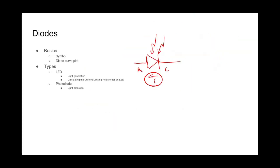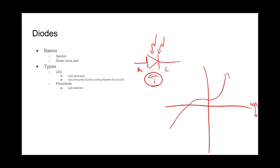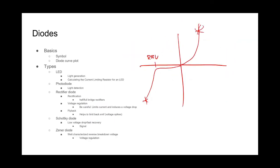One thing I forgot: with photodiodes, light essentially moves the current line up and down on that axis — it allows more reverse current to flow when there is enough light hitting the diode, and keeps it at the standard level in the dark. Basically, it allows more current to flow backwards if there is enough light. That's why Zener diodes are important — they have a well-characterized reverse voltage breakdown. If you want to see a good application, feel free to ask Joe or me in the shop.